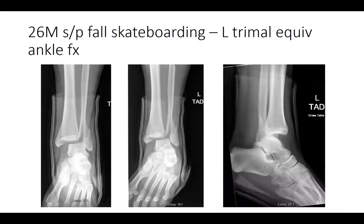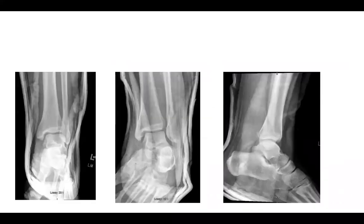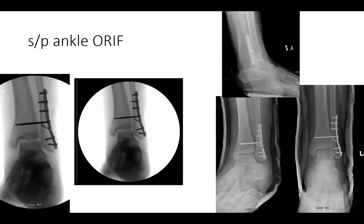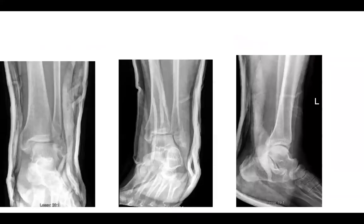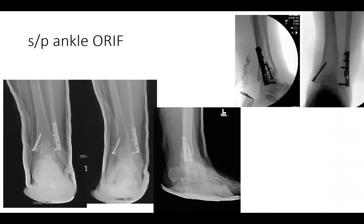First patient is a 26-year-old male who fell skateboarding on a half-pipe with a left trimalleolar equivalent ankle fracture. He was initially closed reduced and taken the following day for an ankle ORIF. Next is a 57-year-old female seen after a trip and fall with a bimalleolar ankle fracture, also left. Closed reduced, taken the following day for an ankle ORIF.